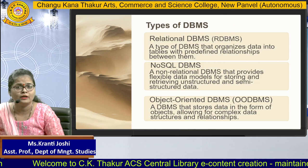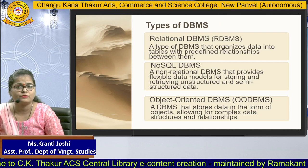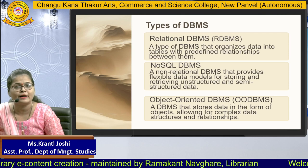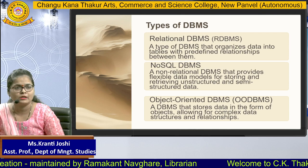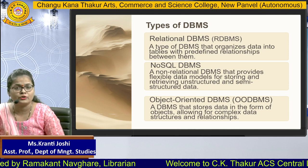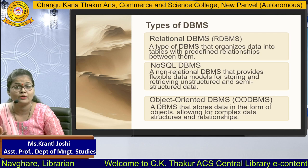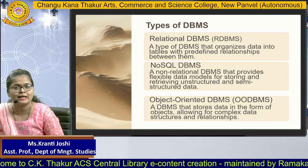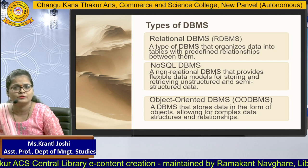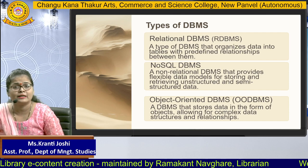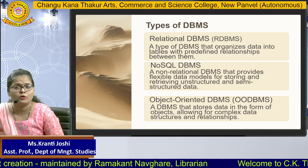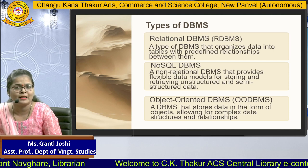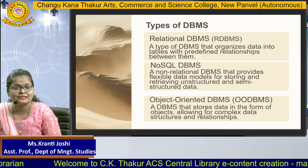Next, we are going to learn about the types of DBMS. The first type is RDBMS — relational DBMS — a type of DBMS that organizes data into tables with predefined relationships between them. Multiple tables are related to each other, which helps reduce data redundancy. The second type is NoSQL DBMS, a non-relational DBMS that provides a flexible data model for storing and retrieving unstructured and semi-structured data. The third type is object-oriented DBMS, which stores data in the form of objects, allowing you to easily retrieve complex data structures and build relationships between complex data.